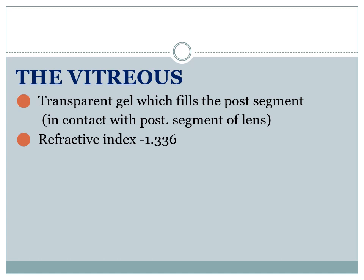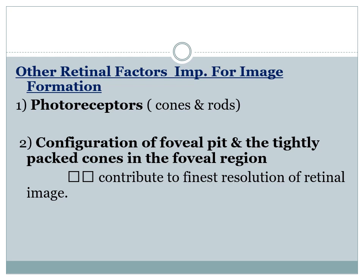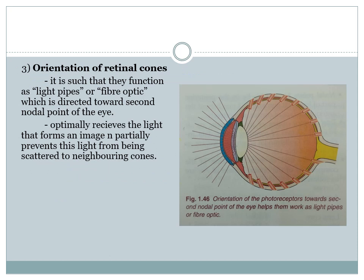The vitreous is a transparent gel which fills the posterior segment in contact with the posterior surface of the lens, with a refractive index of about 1.336. The retina acts as a screen on which the image is formed. Its radius of curvature is 12 mm. The curvature of the retina has two advantages: the image formed by the optical system tends to have a curved surface, and the curved retina covers a much wider field of vision. Other important retinal factors for image formation include photoreceptors — the cones and rods — and the tightly packed cones in the foveal region, which contribute to the finest resolution of the retinal image.